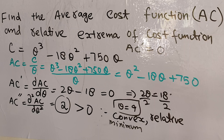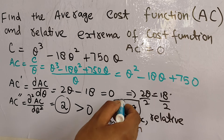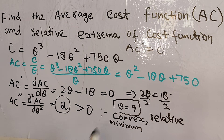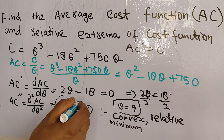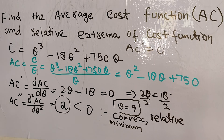If the second derivative were less than 0, we would have a concave average cost function instead. Since it is greater than 0, we confirm the relative minimum at Q equal to 9. I hope that is clear — thank you.